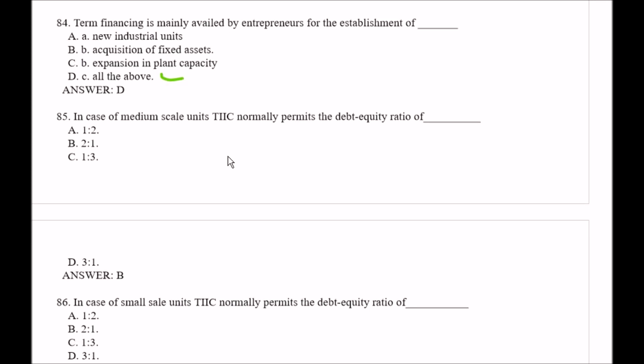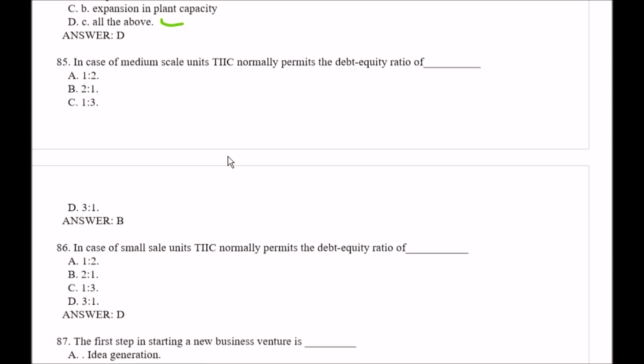Question number 85: In case of medium scale units, TIIC normally permits the debt-equity ratio of — Option A, 1:2; Option B, 2:1; Option C, 1:3; Option D, 3:1. The right answer is Option B, that is 2:1.